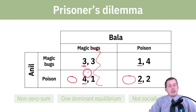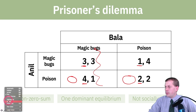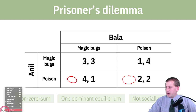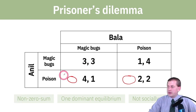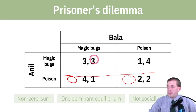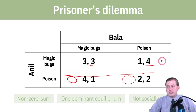Now let's do the same for Bala. Ignore the poison row: if Bala knows Anil is going to use magic bugs, he could get three points using magic bugs or four utils using poison. So Bala will also poison. Then ignoring the magic bugs row: if Bala knows Anil is going to use poison, he could get one point using magic bugs or two points using poison — which means Bala will also poison.